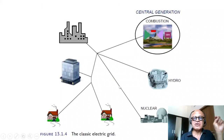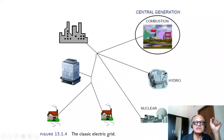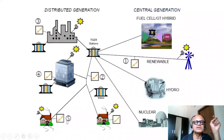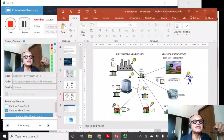This is from 'Bending the Curve,' another course on my YouTube channel. The classic electric grid shows central generation supplying industries, commercial buildings, and residences via centralized grids, whereas the smart grid has both distributed and central generation, with renewables adding biogas and other sources, and residential users having their own generation and storage.